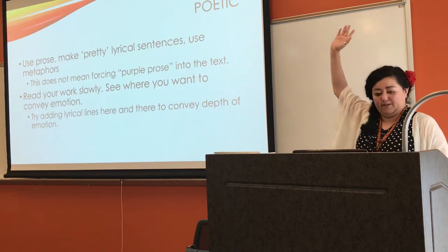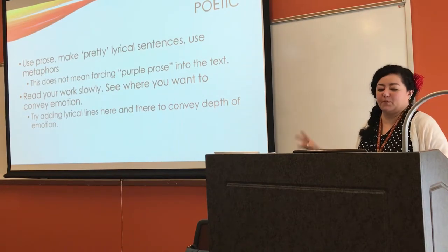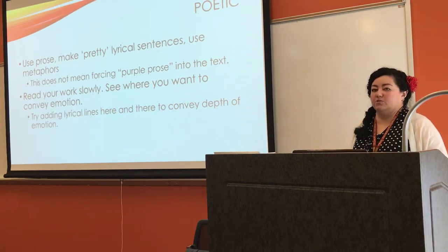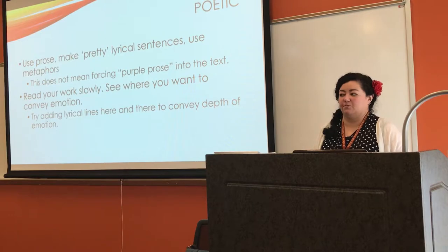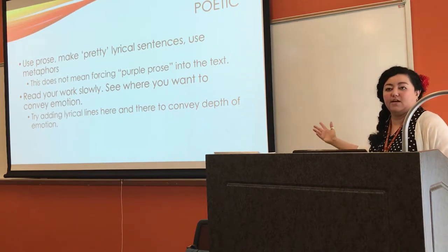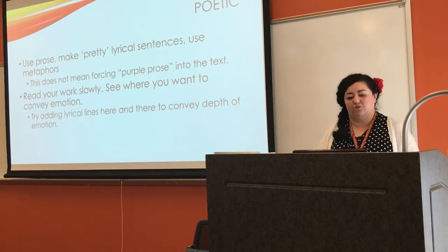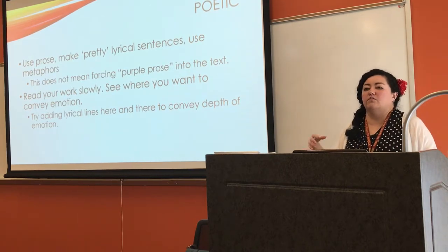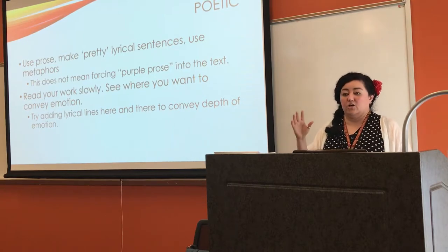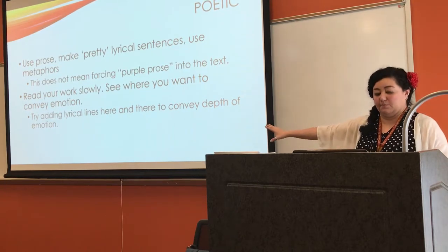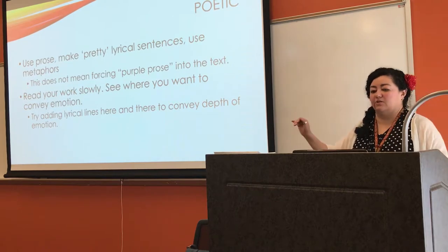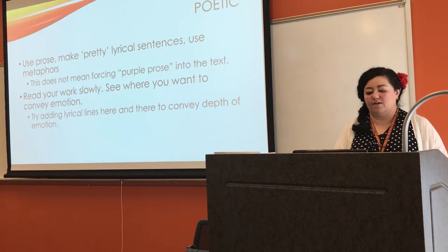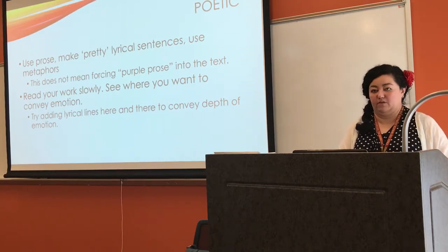Poetic description — we use prose, make pretty lyrical sentences, and use metaphor. It does not mean forcing purple prose in. Read your work slowly. See where you really want this to be an emotional scene — slow down, use that deep observation, start adding some lyrical lines. Get in touch with your inner poet. That will help you convey the depth of emotion of the scene.